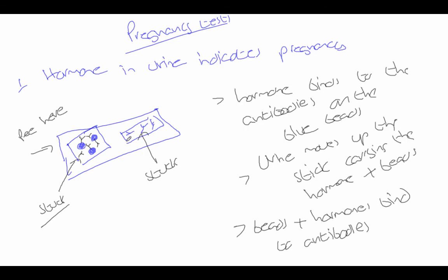If you understand the basic principle — that there's a hormone found in the urine and when a lady pees on the stick, if the hormone is present the antibodies will attach to it making the stick turn blue — you'll get marks. There's a little more detail about how it travels from the pee section to the test strip, but if you understand the basics you can work through the rest.